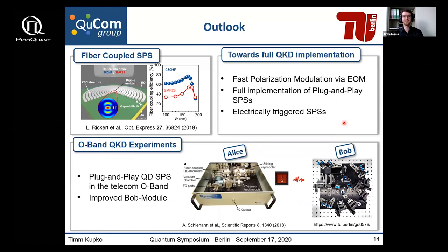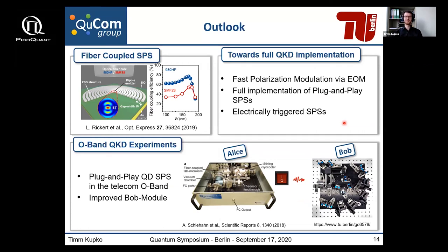As a brief outlook, our next step would be to develop fiber-coupled single photon sources for the telecom band, using bullseye structures that promise fiber coupling efficiency up to 80%. On the receiver side, in a full implementation we would go to polarization modulation via electro-optical modulators. We want to fully implement plug-and-play single photon sources, and for higher frequencies we will also go to electrically triggered single photon sources. There are ongoing open QKD experiments using a fiber-coupled source in a Stirling cryostat as a plug-and-play quantum dot single photon source as sender, and we have also made an improved receiver module with better polarization extinction ratios in the telecom band.